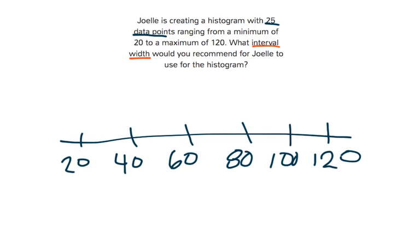In steps of 20, because we break this up into 5 intervals, we have 20 to 120, and that has a range of 100.